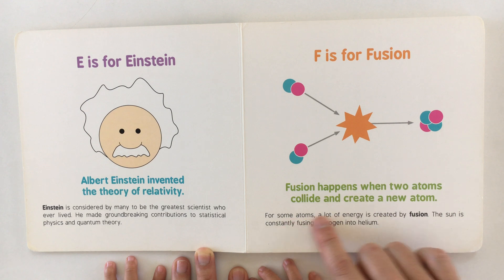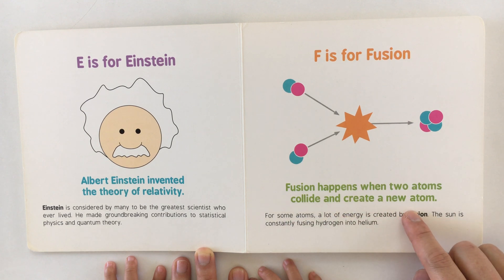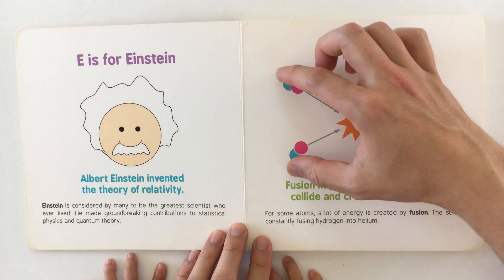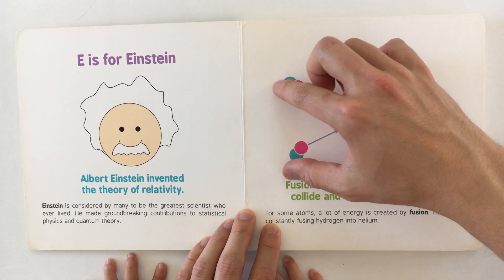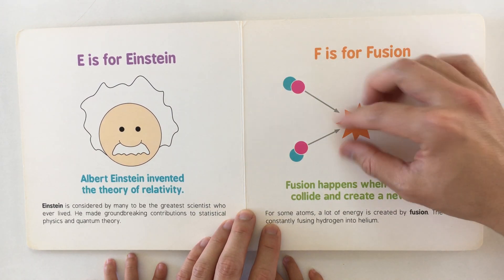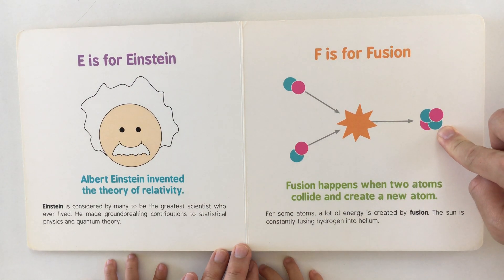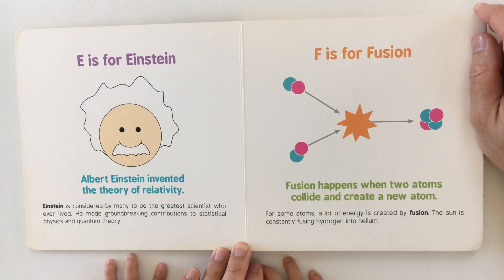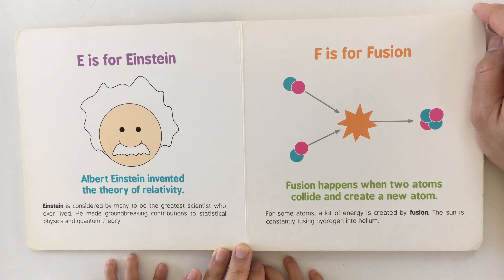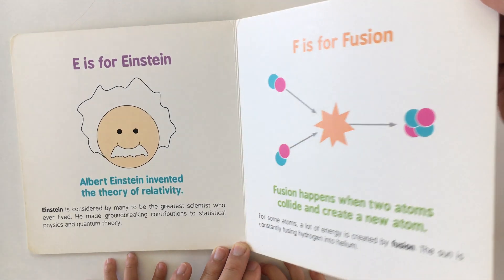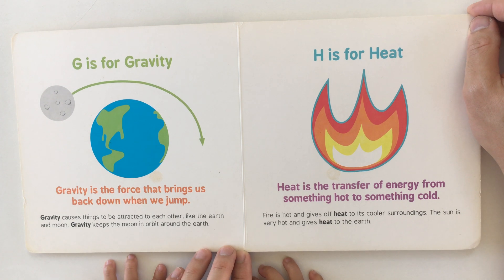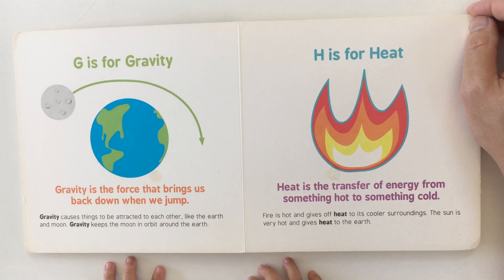F is for fusion. Fusion happens when two atoms collide and create a new atom — look, these two are crashing into each other and combining together. For some atoms, a lot of energy is created by fusion. The Sun is constantly fusing hydrogen into helium.